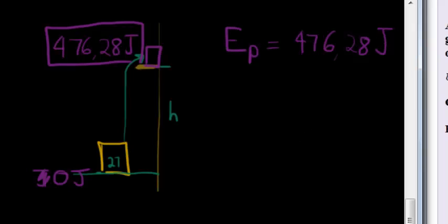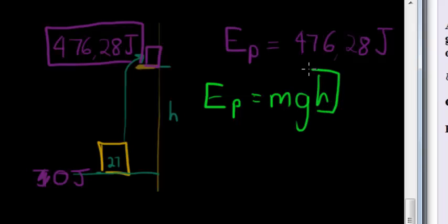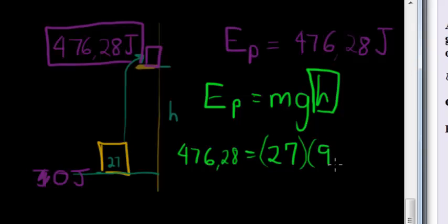Now we know our potential energy formula is not difficult at all. It is simply mass times gravity times height. And it's height that we are trying to calculate, which means we should have all of the rest. We are given 476.28, the mass of 27 kg, and we know gravity is 9.8.